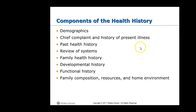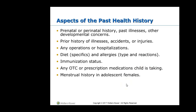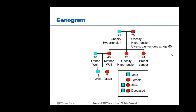Include the chief complaint and history of present illness — what's going on right now that brought them into the office or emergency department? Ask about prenatal and perinatal history, illnesses, injuries, and hospitalizations. Ask whether their shots are up to date, any allergies to medication or food, specific diets like lactose intolerance, and menstrual history in adolescent females. We need to start asking about periods at around age 10.